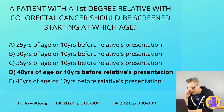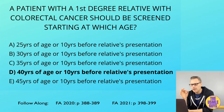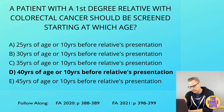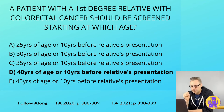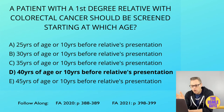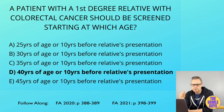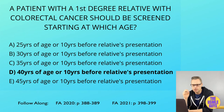If someone has a first-degree relative with colorectal cancer, we screen at 40 years of age or 10 years prior to the age when that first-degree relative presented with their cancer — whichever is earlier. For example, if the relative was diagnosed at 38, then 40 would be two years later, so we actually screen 10 years before age 38, i.e., at 28. That's an easy question to get right on exam day.